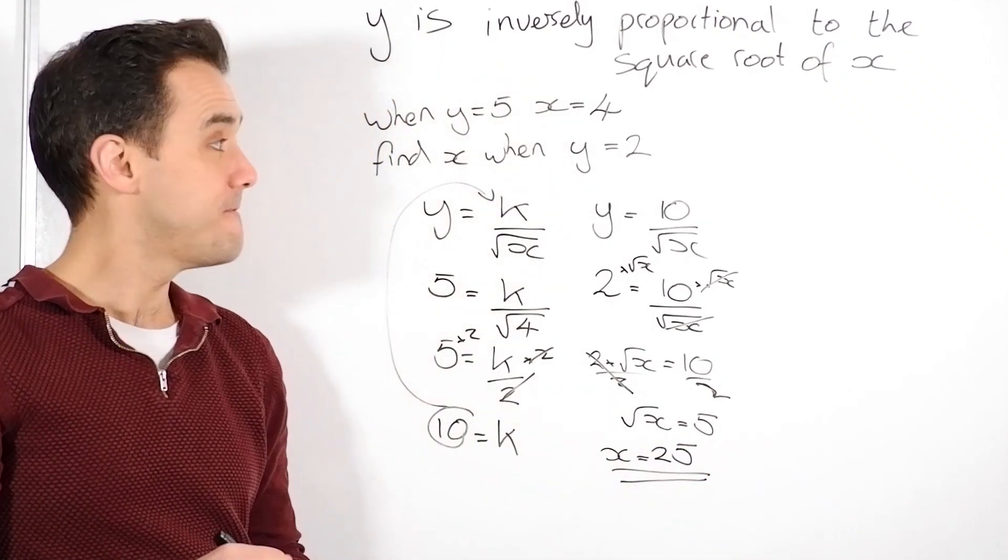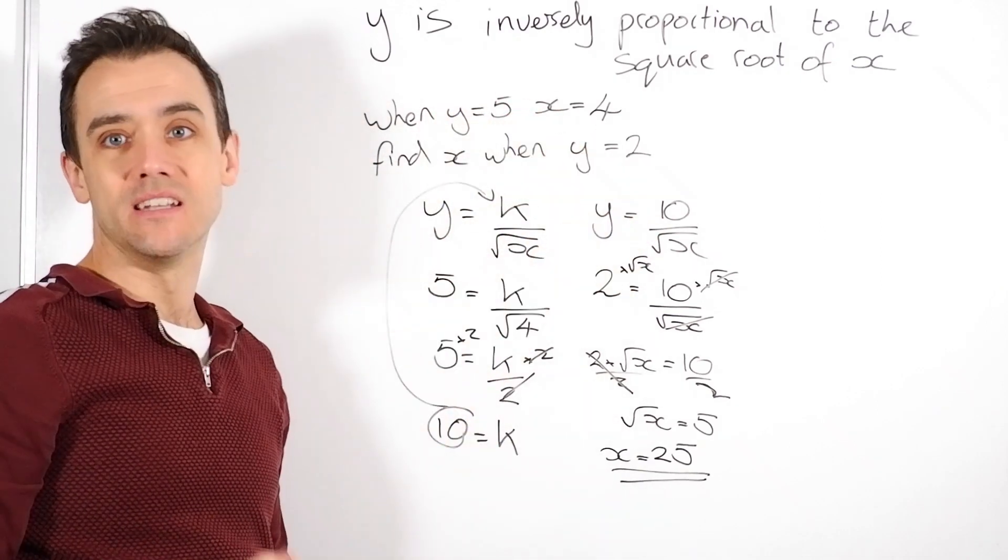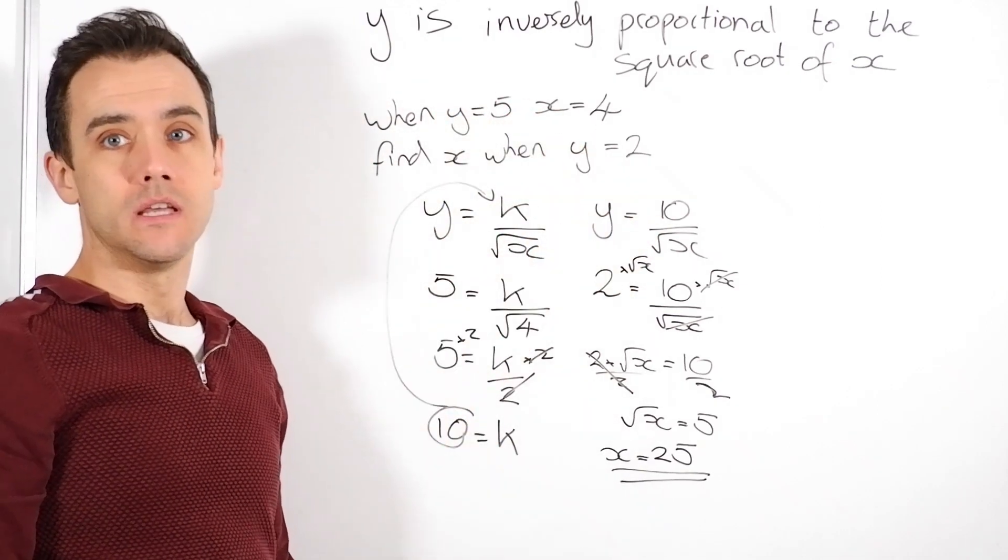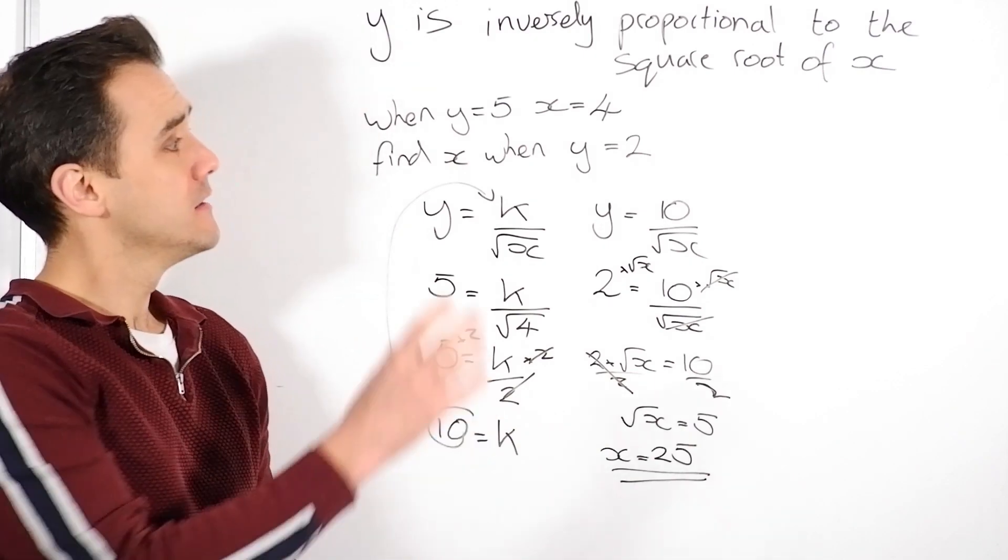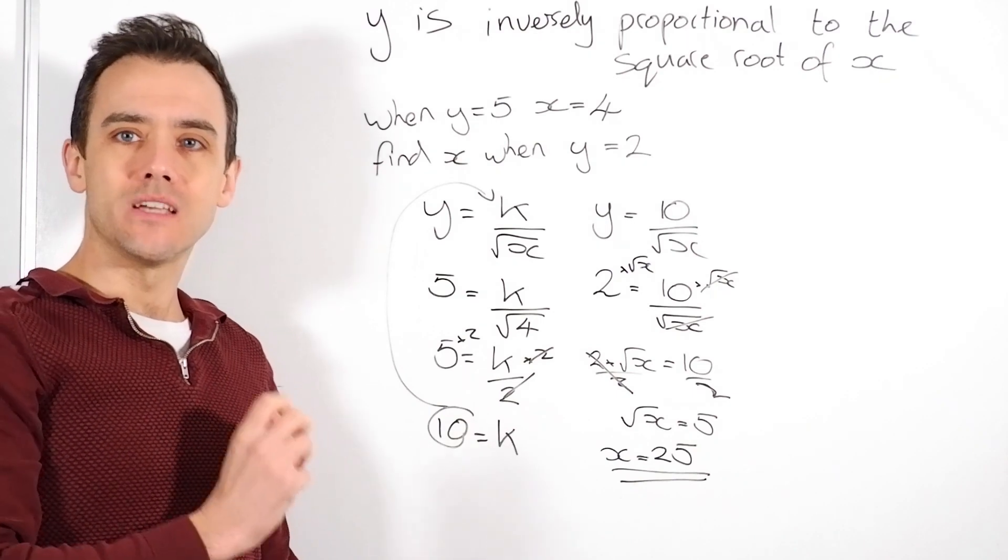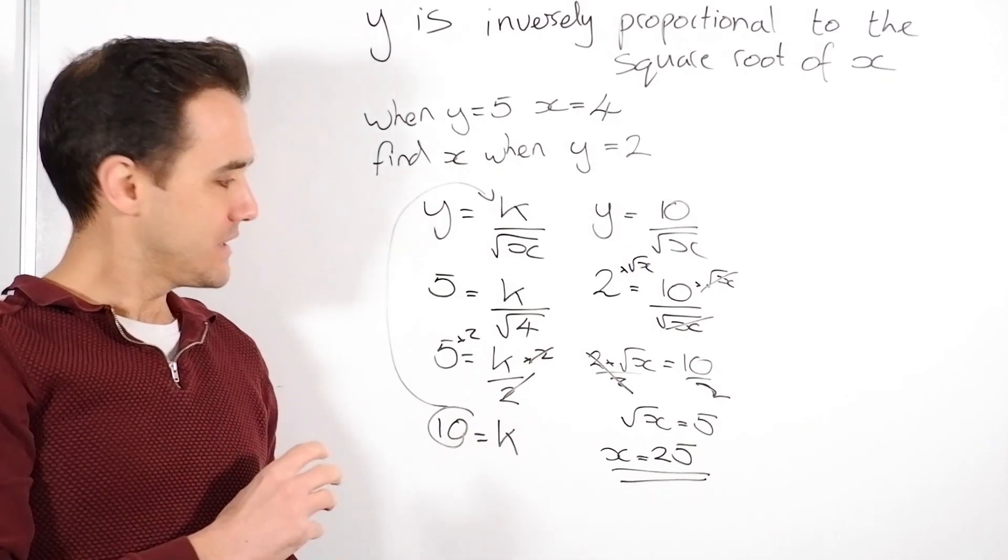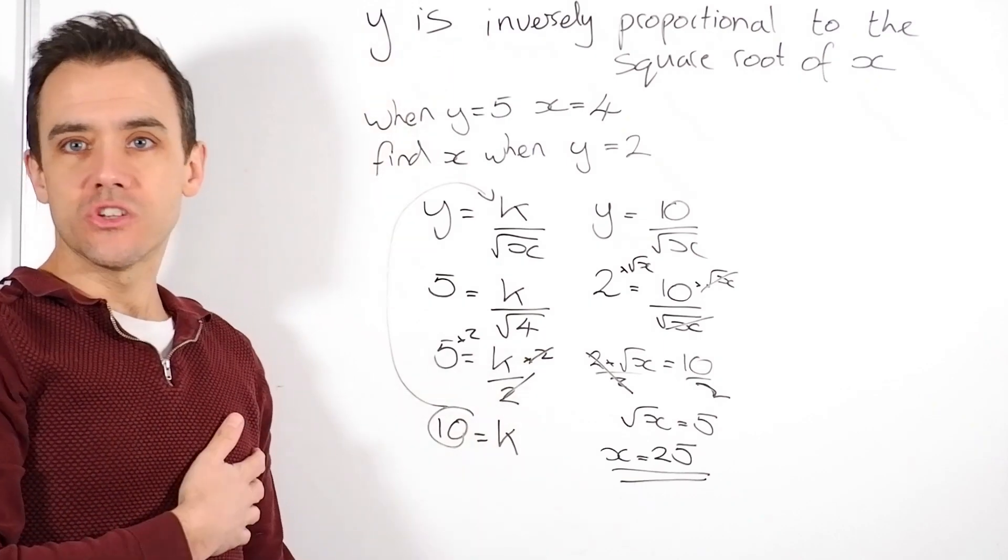So it's just a case of finding that value of k first. Then you're just pulling those numbers in and it's pretty simple algebra. If you need to practice the algebra, go back, look at my algebra videos, brush up on that. But those, direct and inverse proportion, should be some nice easy wins for the exam. Practice all of those questions and you should be good to go.